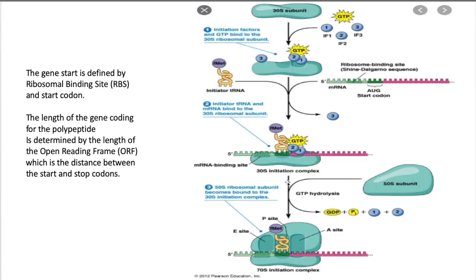Here is the messenger RNA. The question is, where on the messenger RNA do you start translating? That is determined by a ribosomal binding site. Wherever there is a ribosomal binding site, ribosomes can come in and assemble on the messenger RNA to help begin translation at that point. The small ribosomal subunit contains RNA which is complementary to this ribosomal binding site, and that's how the ribosome is able to line itself up.